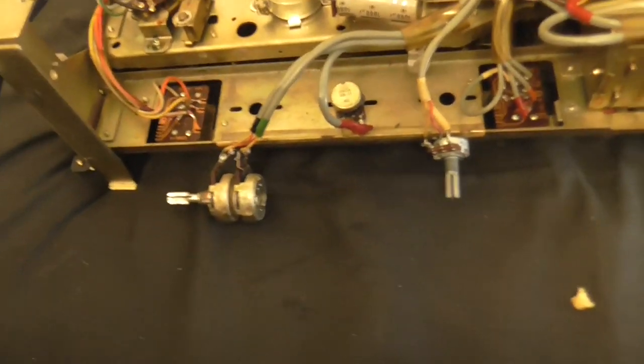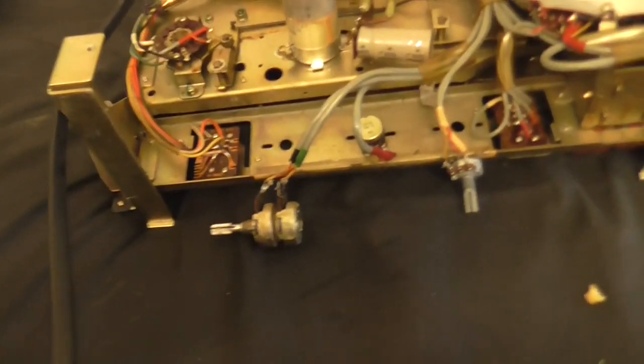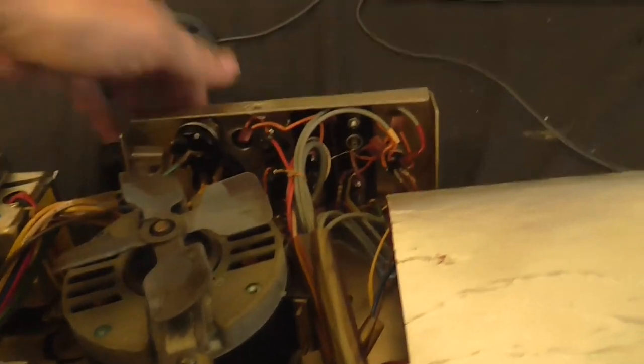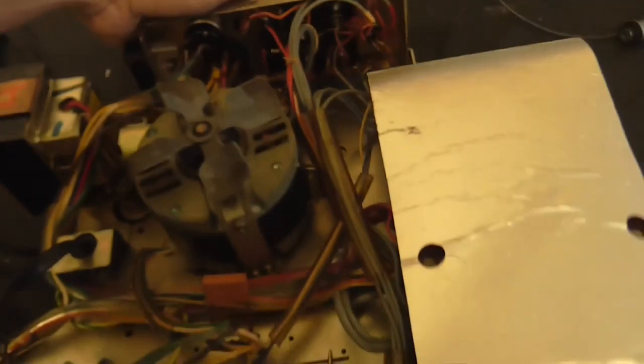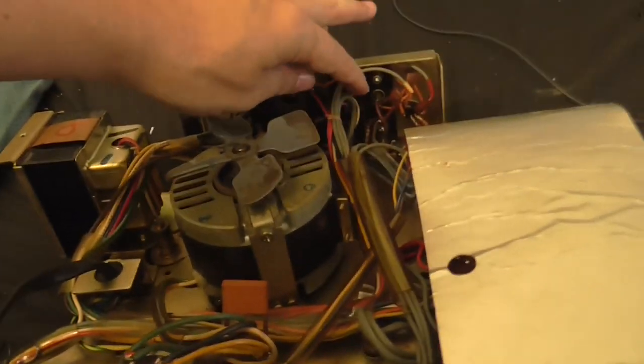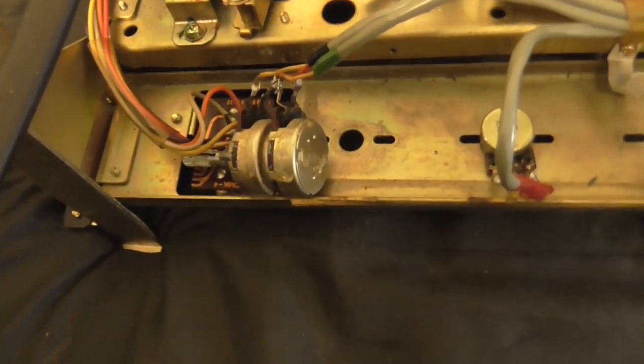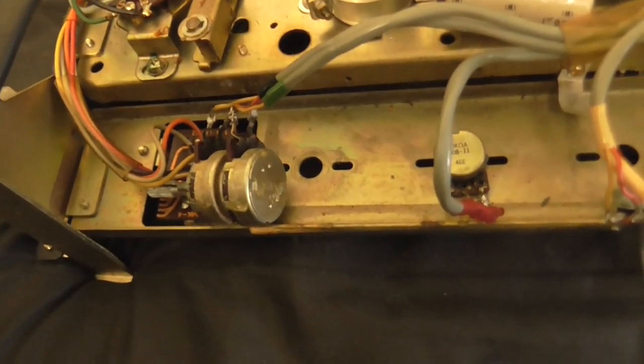So the modification that I'm going to do to this is, what I'm thinking of doing is running a set of extra wires from the inputs there. I believe this one is the input, aux in. Just running a set of extra wires from there down to these potentiometers. Then I'm going to put a switch in so I can switch this between normal operation and being used as an amplifier.